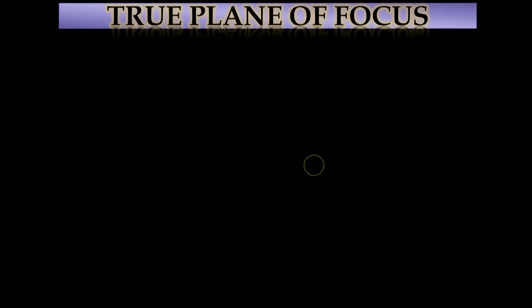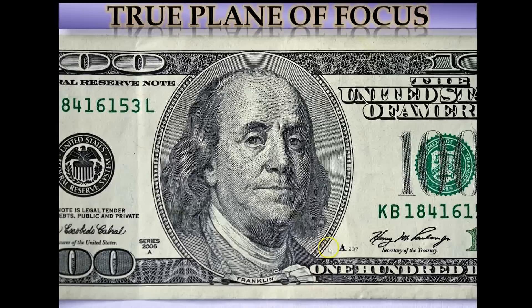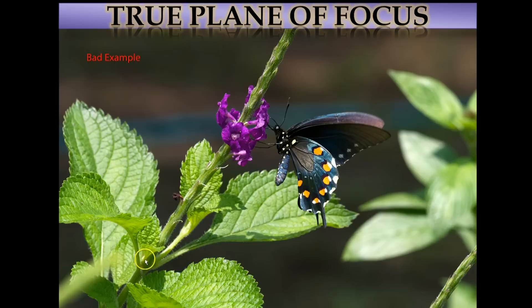The other way to deal with shallow depth of field is a true plane of focus. Let's go back to the $100 bill. Rather than photographing from an angle where you have a foreground, middle ground, and background at different parts of the bill, I get directly over the bill and now have a true plane of focus. Even at f/2.8 — where you saw how quickly everything goes out of focus — now everything is in focus because I've got a true plane of focus. So let's see how this translates to nature shots. Here's actually a bad example — I've got a lot of things going wrong in this picture.